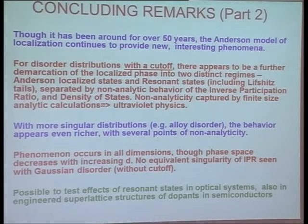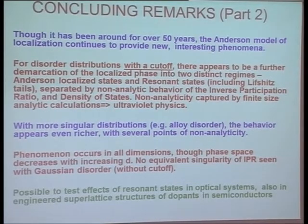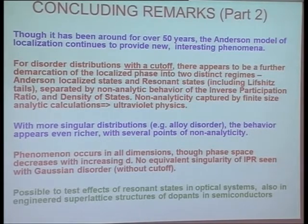The physics always seems to be: if you can pull out the specific kinds of insulating states that have different energies than the typical insulating states, you can get this physics out. It is possible to test the effects of these resonant states in optical systems and possibly also in engineered structures. But it will really require experimentalists to be good friends of theorists.